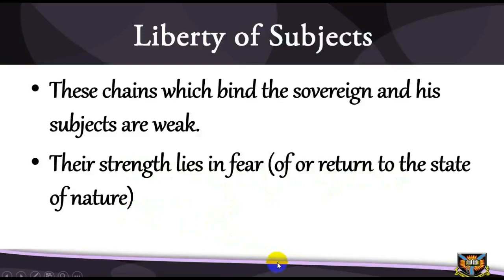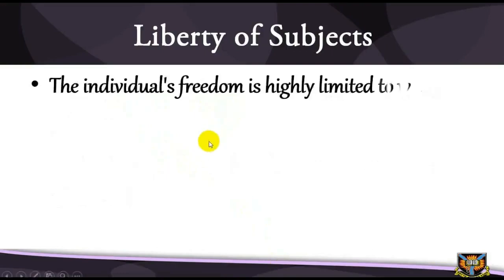Basically, the liberty of a subject lies therefore only in those things which, in regulating their actions, the sovereign has permitted — such as the liberty to buy and sell, and otherwise contract with one another, to choose their own abode, their own diet, their own trade of life, and to institute their children as they themselves think fit, and the like. Thus, the individual's freedom is highly limited to what the sovereign permits or chooses to ignore.